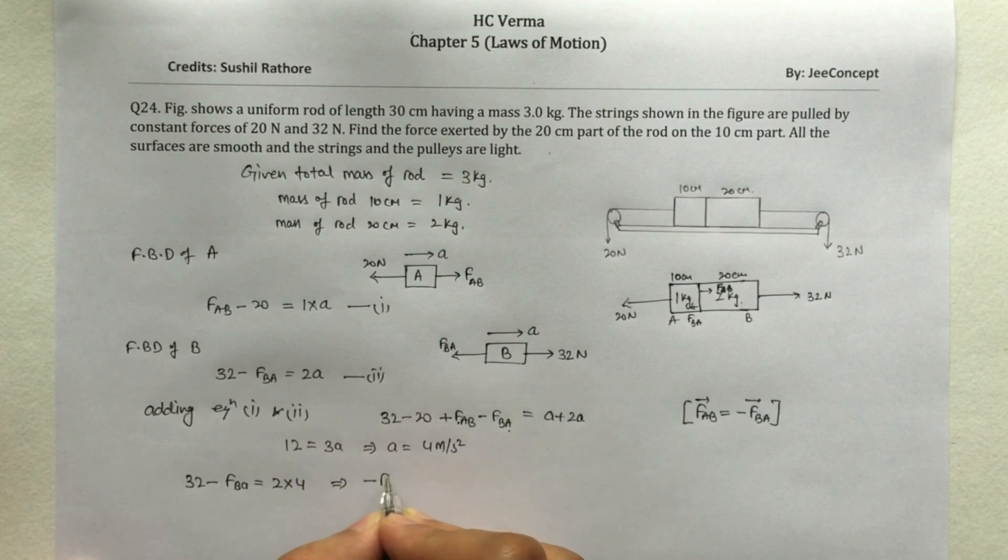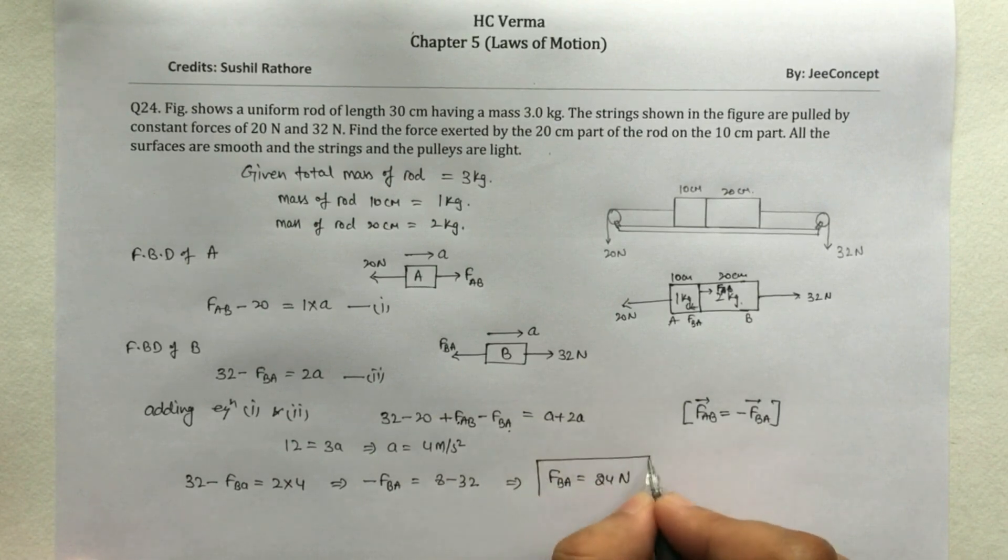So that means minus of FBA equals 8 minus 32 that means force on B due to A is 24 N. So this is the solution of this problem.